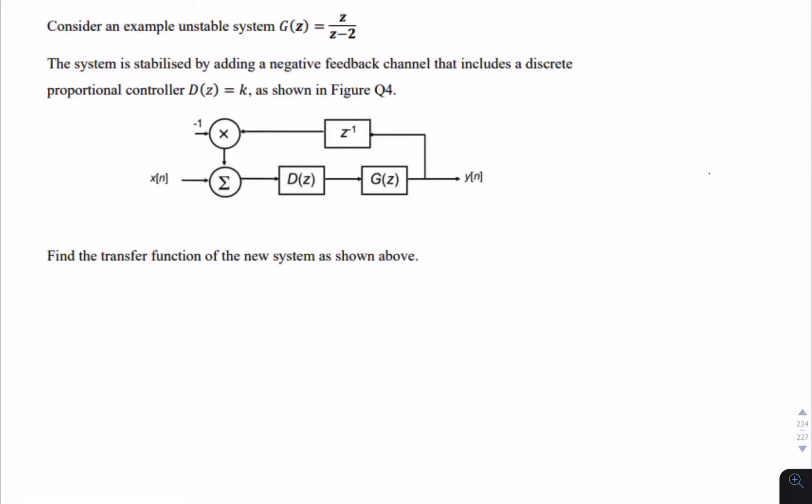So in this question, we have a system that's being stabilized. Now, even if we don't talk about stability, if we simply look at this block diagram, the question is use the block diagram to find the transfer function. So the transfer function is a relationship between the output and the input. So it's the ratio of y of z divided by x of z.